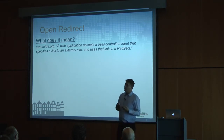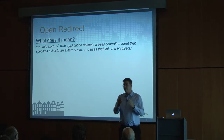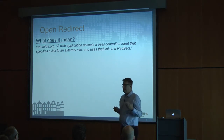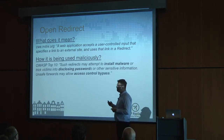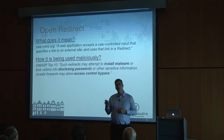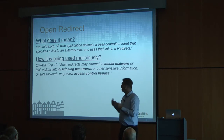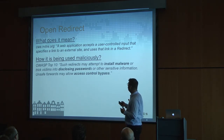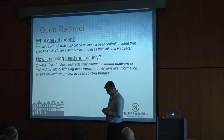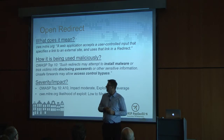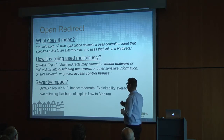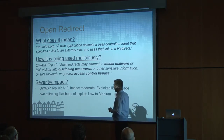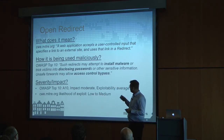According to MITRE, an open redirect vulnerability is when someone is redirected from the application to a different place — whether it's an external link, an external page, or inside the application. How is it used maliciously? According to OWASP Top 10, it can be used to install malware, bypass access control, and disclose passwords via phishing. The severity is moderate, exploitability is average, and according to MITRE, the likelihood of exploit is low to medium.